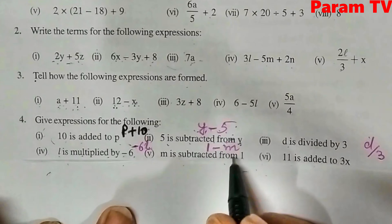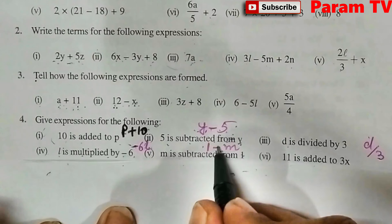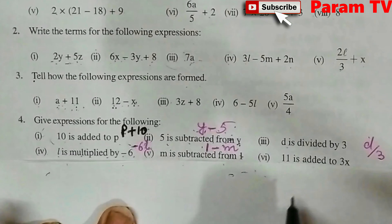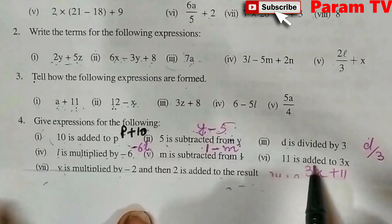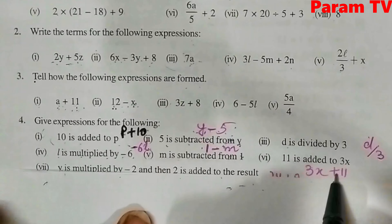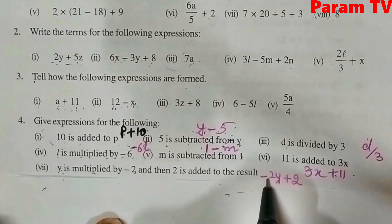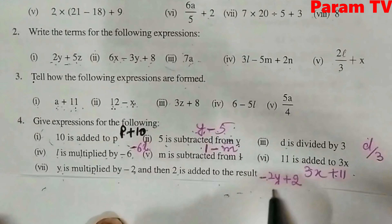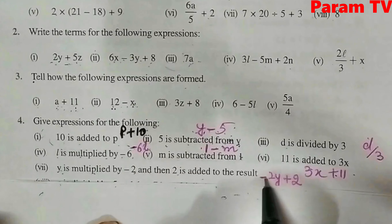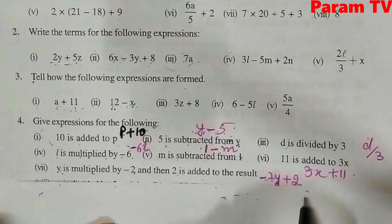M is subtracted from 1 — 1 will be written first, so: 1 minus M. 11 is added to 3X — write 3X first, then add 11: 3X plus 11. Y is multiplied by minus 2, and then 2 is added to the result — so: minus 2Y plus 2.